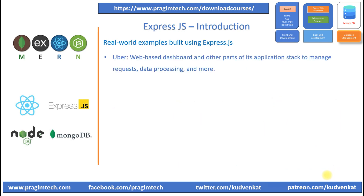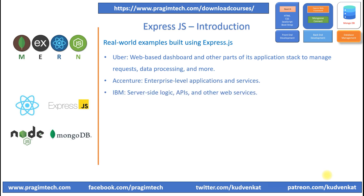Uber, the global ride-hailing service, uses ExpressJS for its web-based dashboard and other parts of its application stack to manage requests, data processing, and more. Accenture, a multinational professional services company, utilizes ExpressJS for building various enterprise-level applications and services. IBM uses ExpressJS in various projects and products to handle server logic, APIs, and other web services.